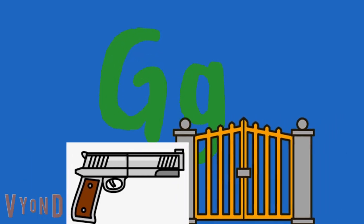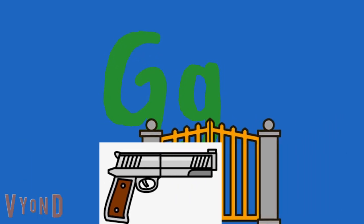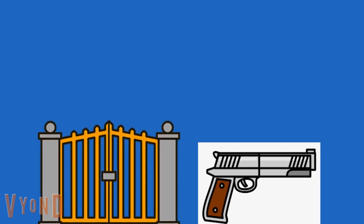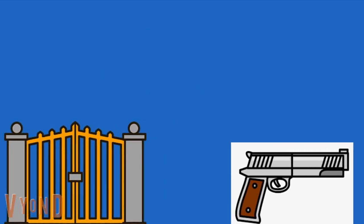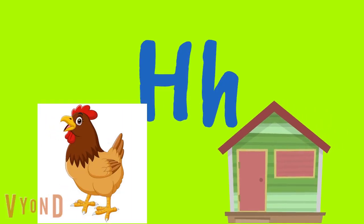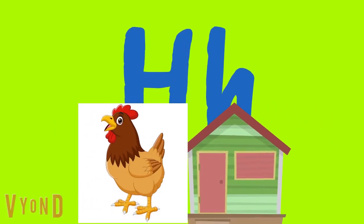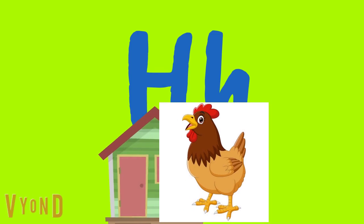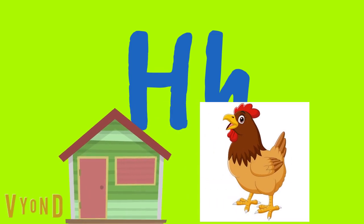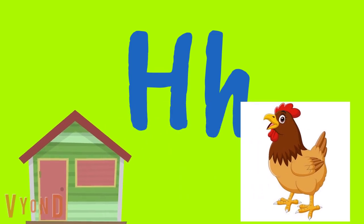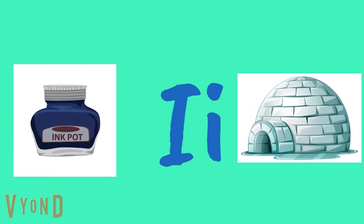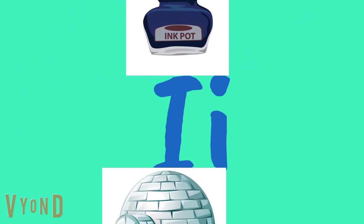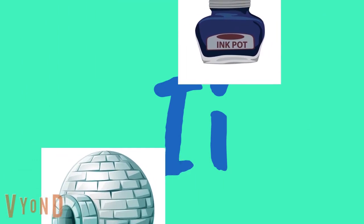G, G — gun. G, G — gate. H, H — hen. H, H — house. I, I — import. I, I — igloo.